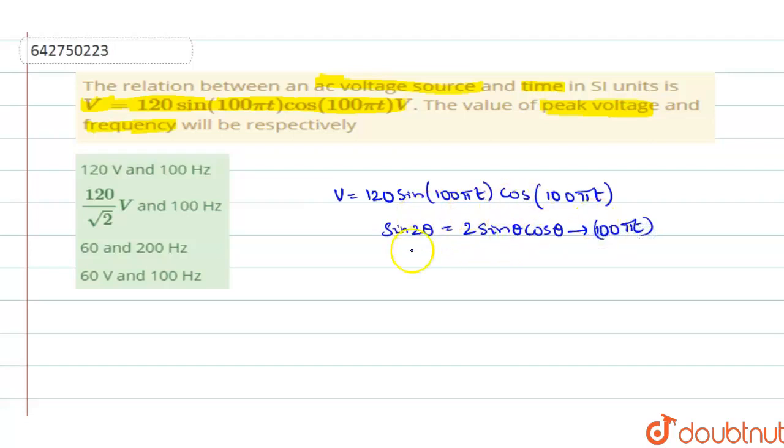2 sine θ into cos θ, you can write this as 120, which can be written in terms of 2. When you write it, you get it as 60 into 2. So it becomes 60 into 2 sine of 100πT into cos of 100πT.